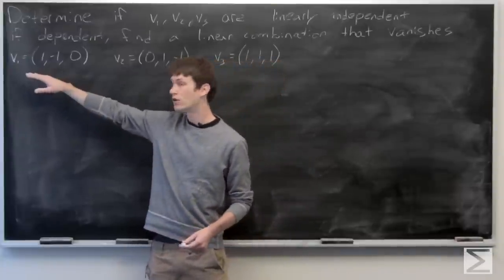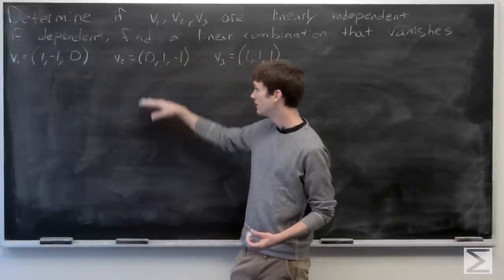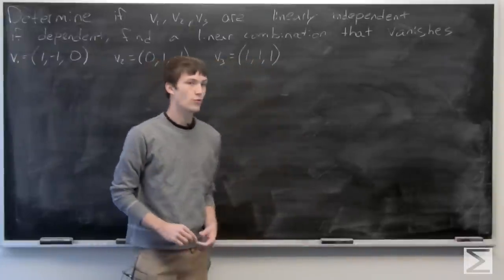So we're given that v1 is the vector (1, -1, 0), v2 is (0, 1, -1), and v3 is (1, 1, 1).